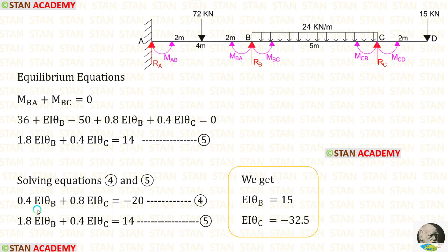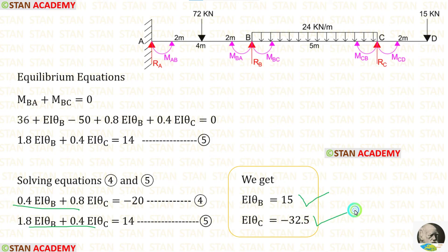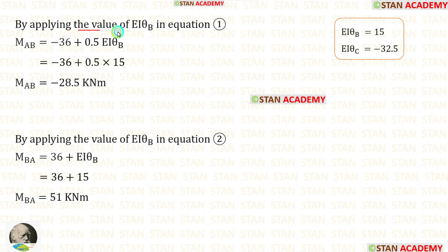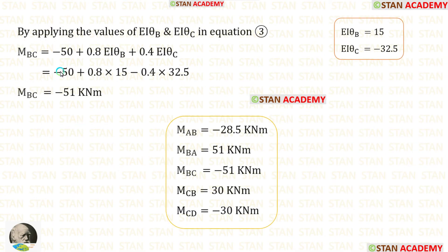We can now use a calculator to solve these two simultaneous equations. If you don't know how to solve two equations using a calculator, see the link in the description below. After solving, we get EI·theta B and EI·theta C. Substituting EI·theta B gives MAB, and substituting both values gives MBC. All moments have now been calculated.